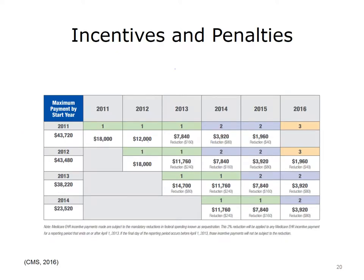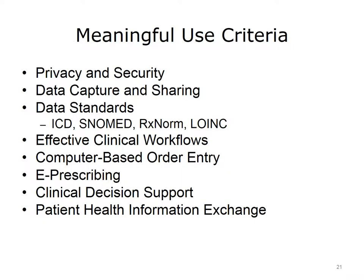The incentives are a fixed dollar amount for the initial years, while the penalties for not meeting the requirements are in the form of a several percentage point decrease in reimbursement payments from the Centers for Medicare and Medicaid, CMS. The grid outlined in this slide indicates the incentives per year that an eligible provider can receive when starting the program in 2011, 2012, 2013, or 2014. To hospitals, small and large practices, and healthcare facilities, this means millions of dollars. The MU incentives considerably offset the cost of obtaining and implementing health IT.